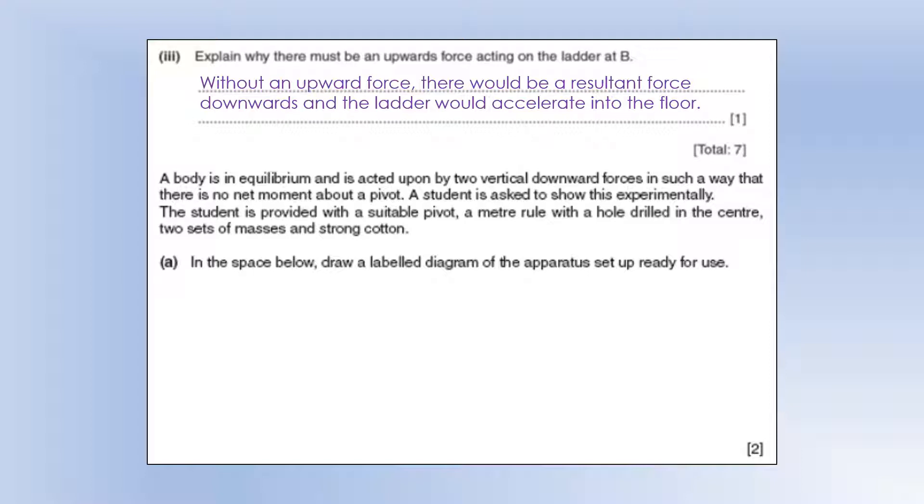So a body is in equilibrium and is acted on by two vertical downward forces in a way that there is no net moment about pivot. A student is asked to show this experimentally. The student is provided a suitable pivot, a meter ruler with a hole drilled in the center, two sets of masses, and strong cotton. How are we going to set this up? Well, we're going to have a situation like this. So we're going to have the piece of string tied through the hole in the middle and attached to the pivot.